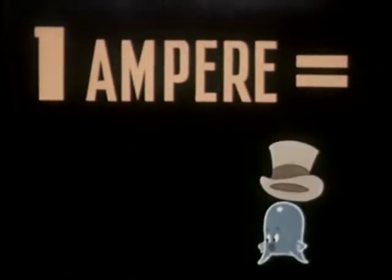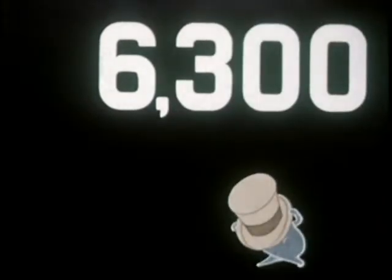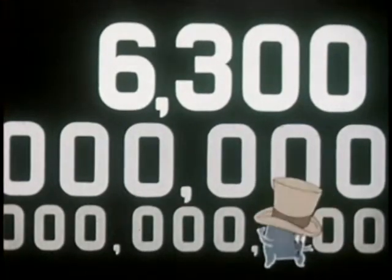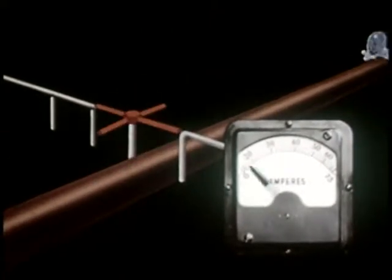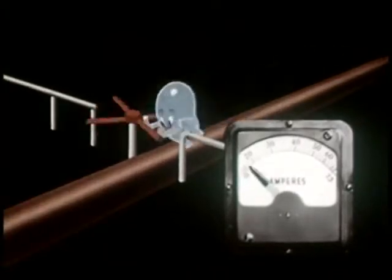Now hold on to your hat. Six billion, three hundred million, billion electrons passing any given point in one second. Current, or amperage, then, is the number of electrons that pass a given point in a given time.